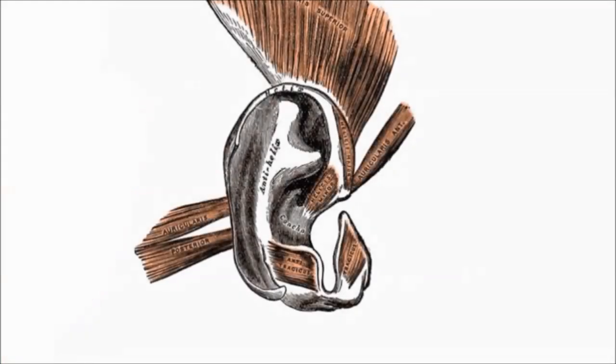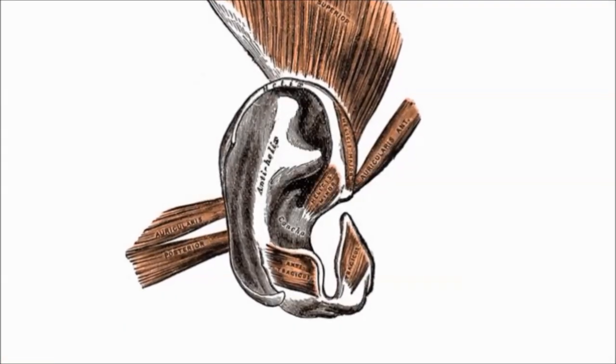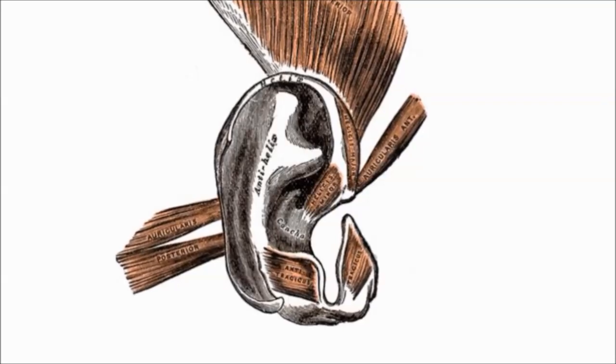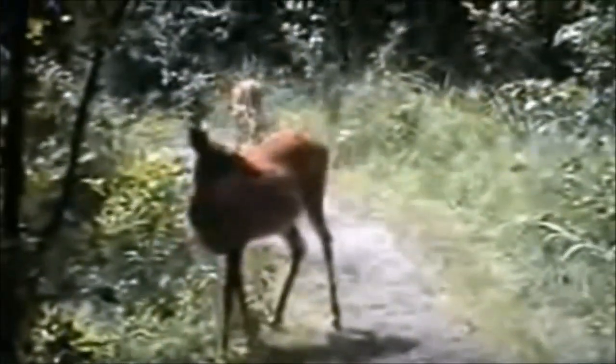Humans also have remnants of ear-wiggling muscles. There are three small muscles around each of the human ears that apparently have no function whatsoever. In other mammals, these muscles are often enlarged and serve an important function, such as in deer, that use them to turn their ears toward a source of sound. However, few humans can wiggle their ears, and none can turn them toward sound.